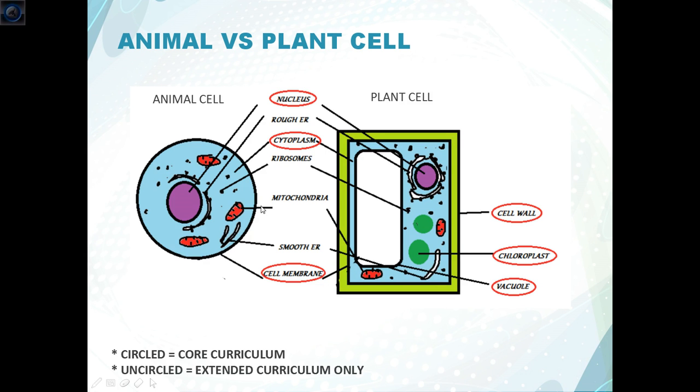So first of all, I'm just gonna start off with ribosomes. Now ribosomes are for protein synthesis. They're found in the rough endoplasmic reticulum which I'll explain to you soon. And they're also found freely in the cytoplasm and they are represented as black dots.